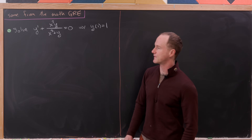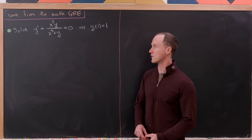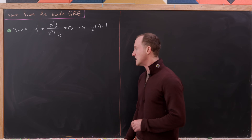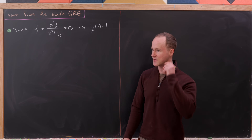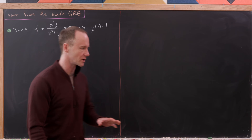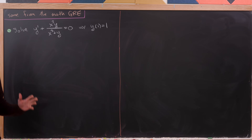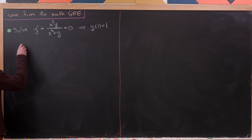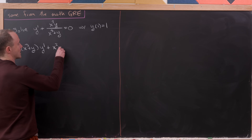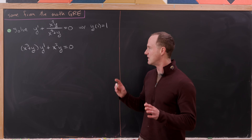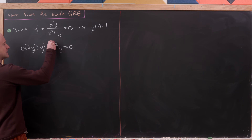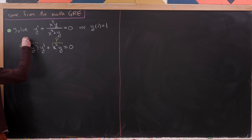We want to solve the differential equation y' + x²y/(x³ + y) = 0 with the initial condition y(1) = 1. Comparing it to the different types of differential equations, this looks closest to an exact differential equation. If we rewrite it as (x³ + y)y' + x²y = 0, it's in the format of an exact DE, where this would be P and this would be Q.